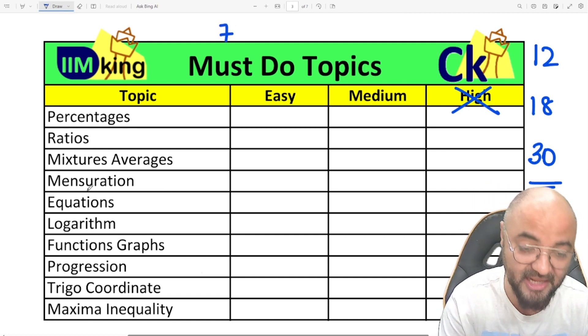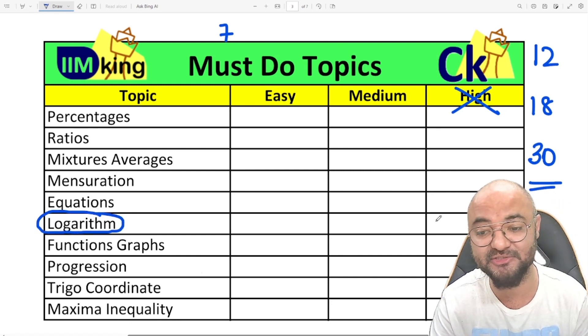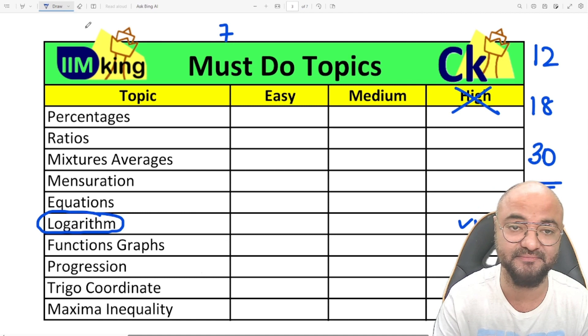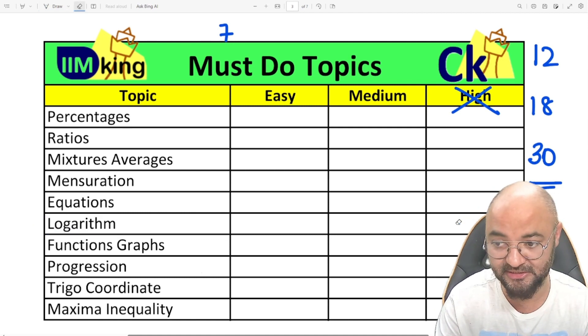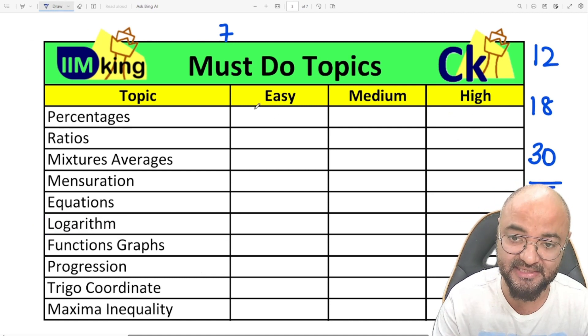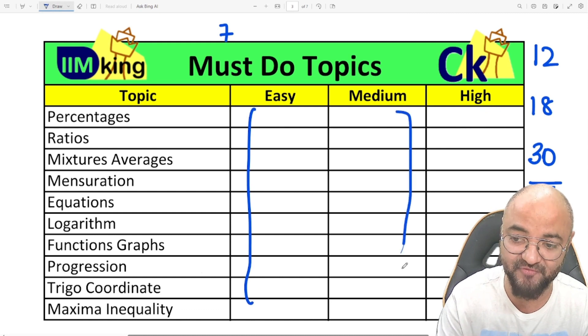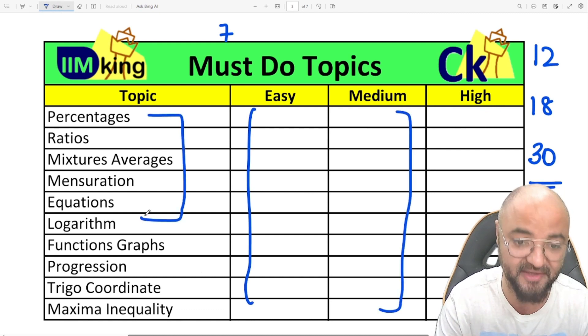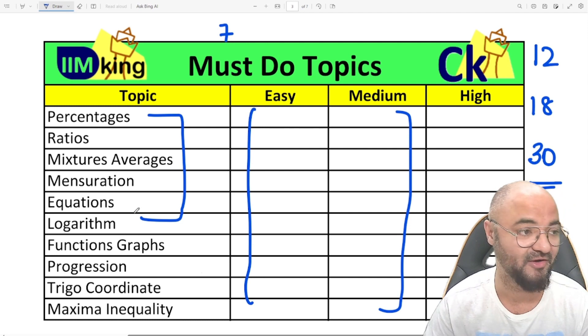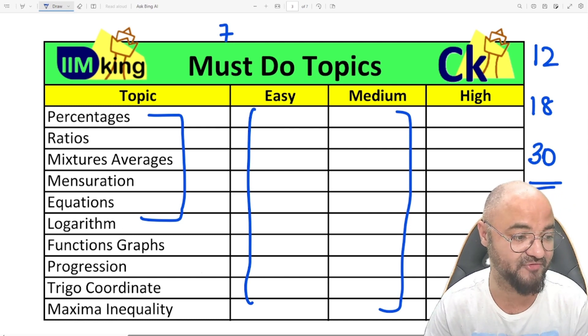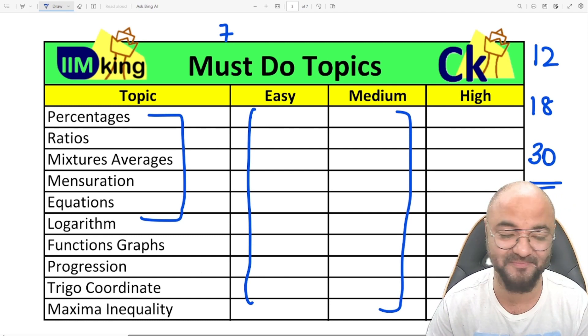At least easy and medium topics I have to do so that all these combined topics I can easily solve. So these are the 10 topics you have to do from the CAT point of view. All the best.